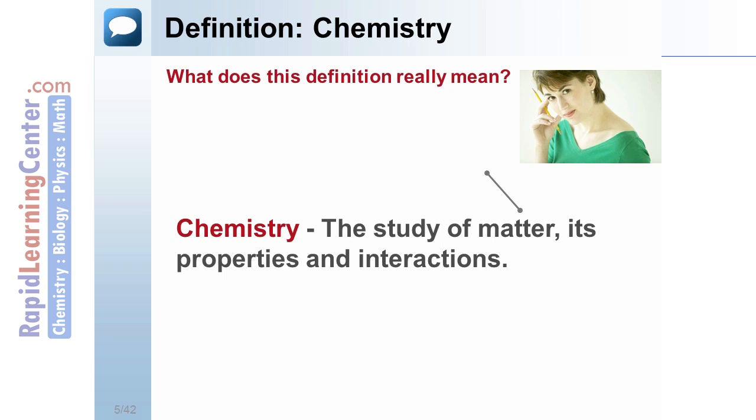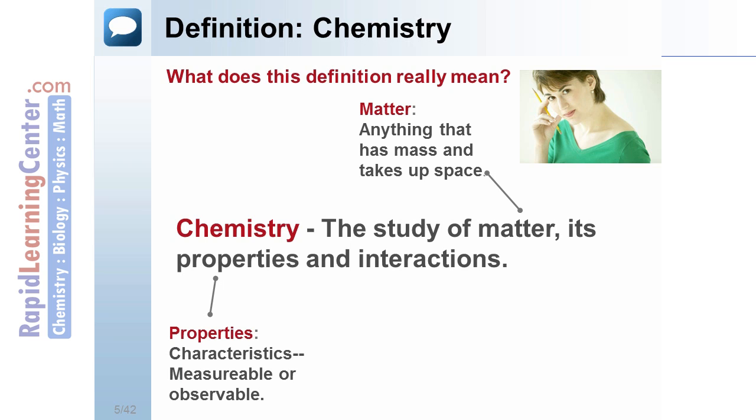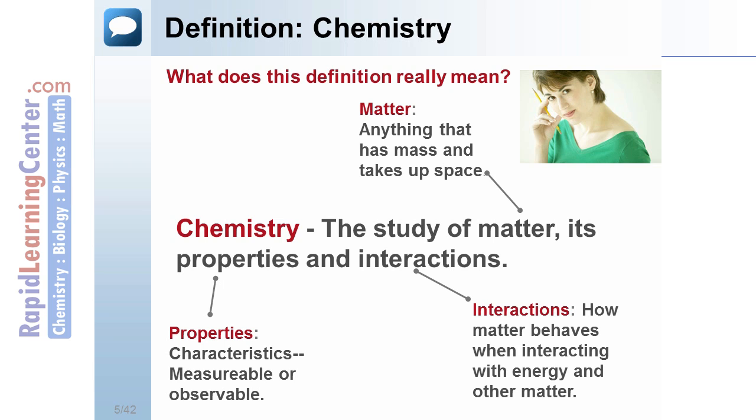But what does this definition mean? Matter is anything that has mass and takes up space, anything that is made from atoms. Properties describe how the matter behaves, and interactions describe how the matter interacts with energy and other types of matter.